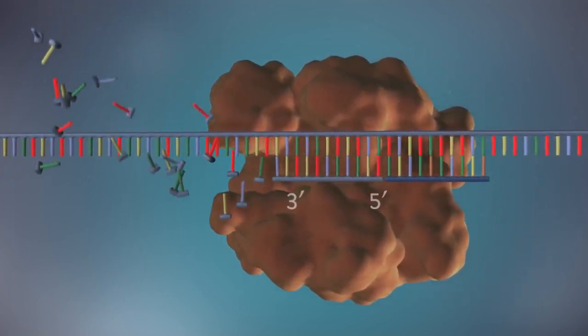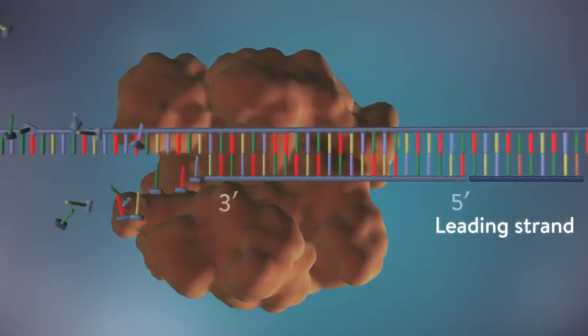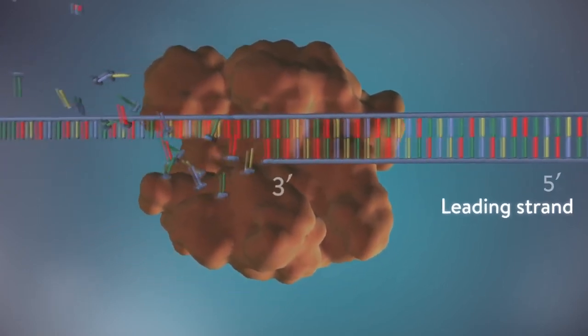One of the new strands of DNA, the leading strand, is made continuously, the DNA polymerase adding bases one by one in the 5' to 3' direction.